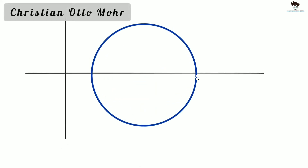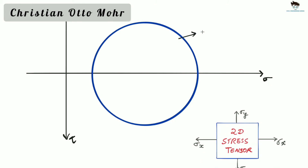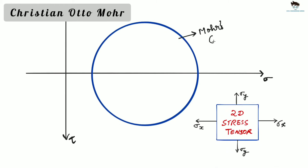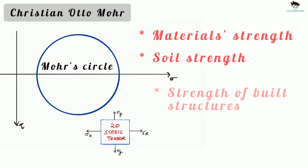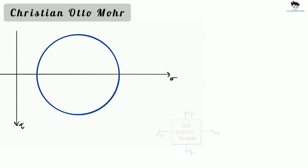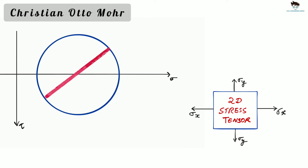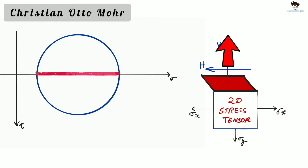Mohr's Circle, invented by Christian Otto Mohr, is a two-dimensional graphical representation of any stress tensor. Mohr's Circle is often used to determine the material's strength, soil's strength, and the strength of built structures. It is also used for calculating stresses in any plane by reducing them to vertical and horizontal components. The vertical components are normal to the plane, and the horizontal components are tangential to the plane.